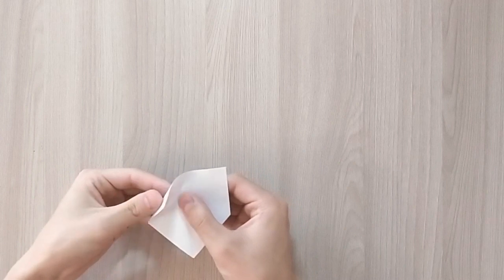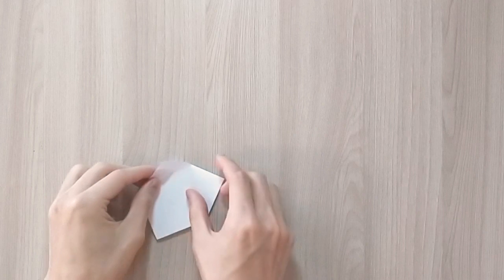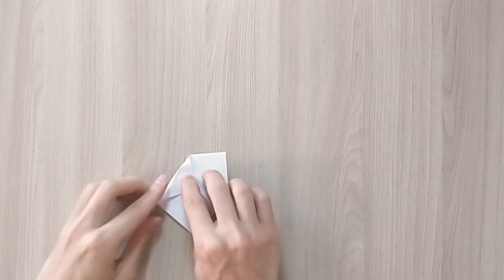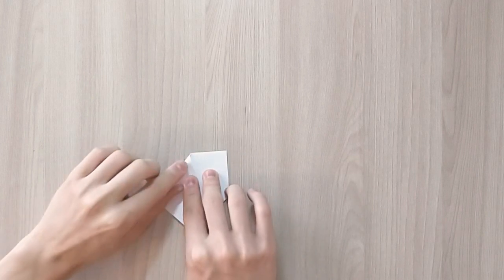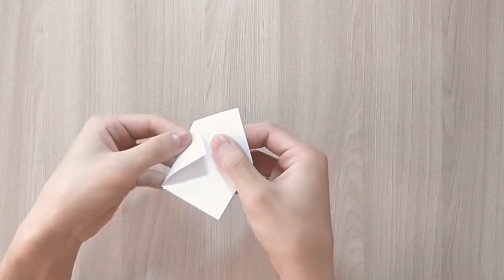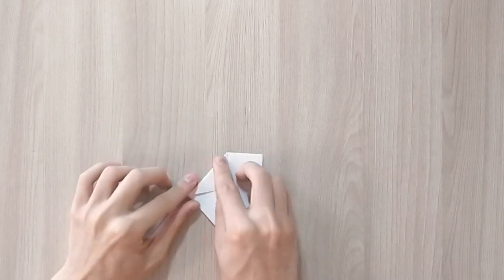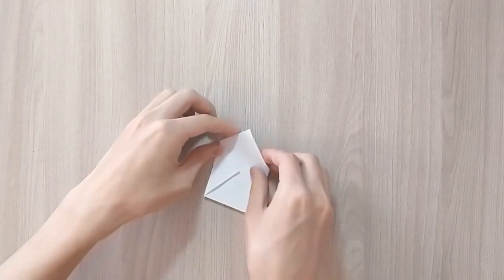And now, in order to make the second half of the sail, you're gonna fold it right up to the center line exactly. See, like that. And then repeat on the other side.